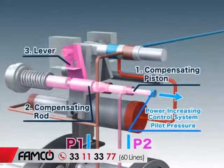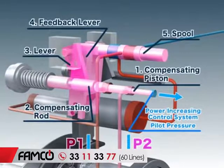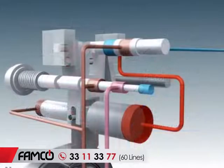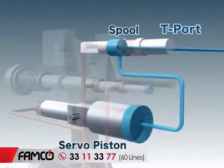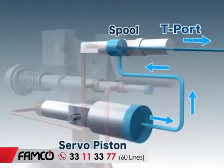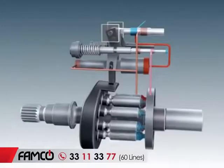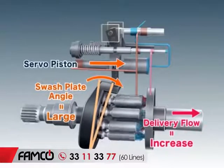As the compensating rod moves, the lever rotates, moving the feedback lever, which in turn moves the spool. As a result, the pressure within the larger side of the servo piston is released through the tank port, which then moves the servo piston. As the servo piston moves, the inclination of the swash plate increases, increasing the delivery flow.